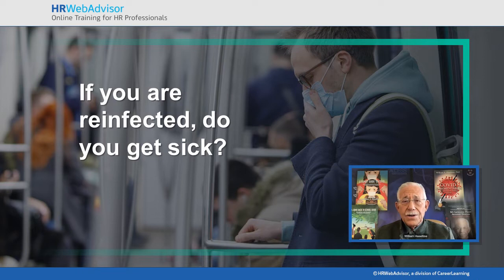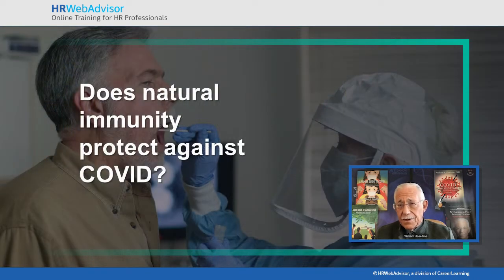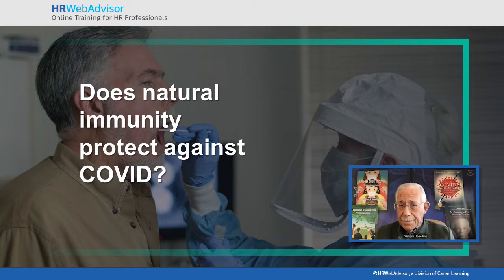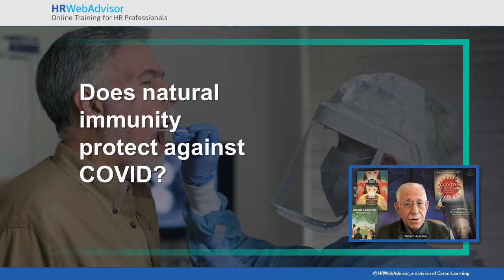I think one of the biggest unanswered questions is: does natural immunity protect? Probably not for very long for the great majority of people. Those who are asymptomatic, those who have mild symptoms — in some cases all detectable antibodies, not just neutralizing antibodies, disappear in six to eight weeks. It's a somewhat open issue because there are conflicting reports.